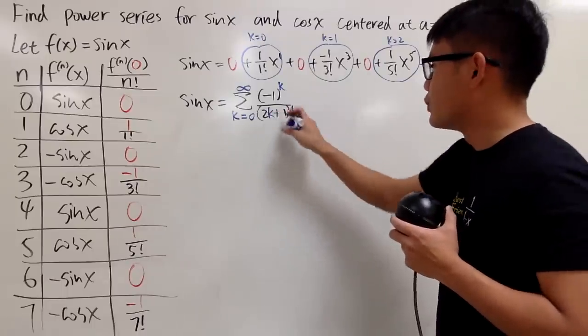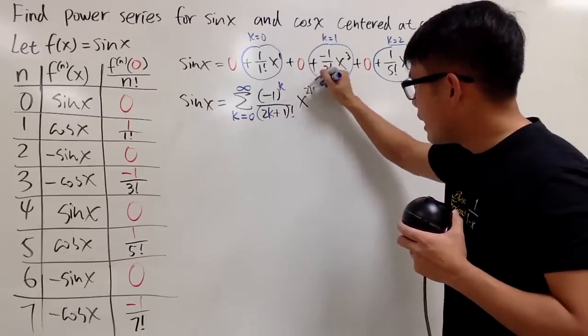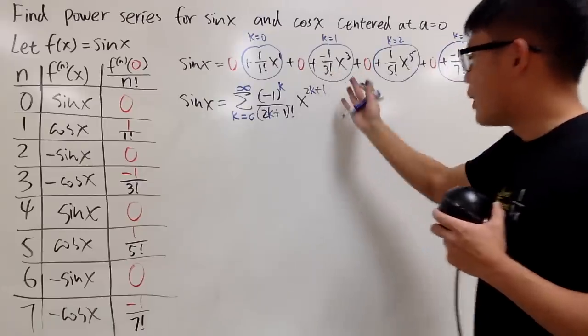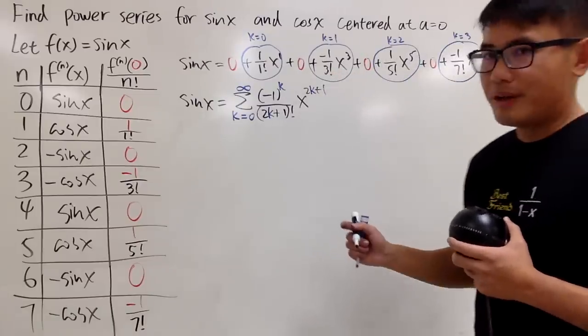And then for the power, it matches with this. So, you can just put down x to the 2k plus 1 power, like this. That's cool. So, this right here is pretty much it.